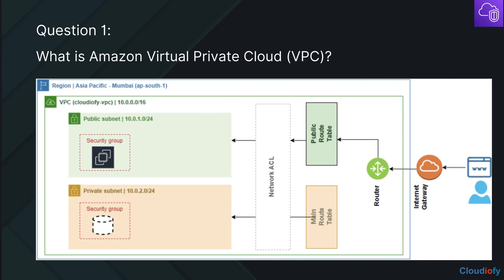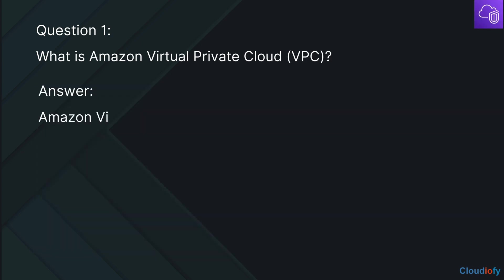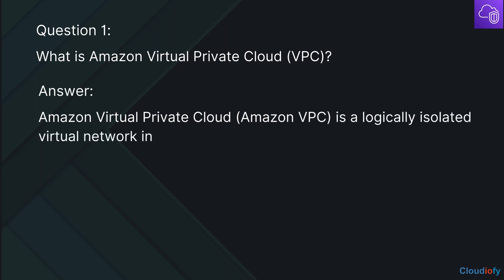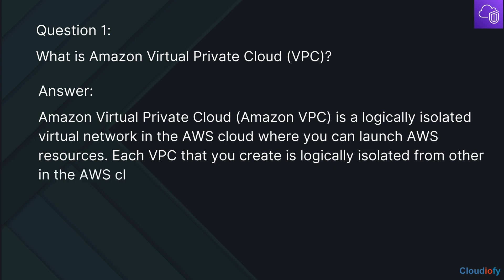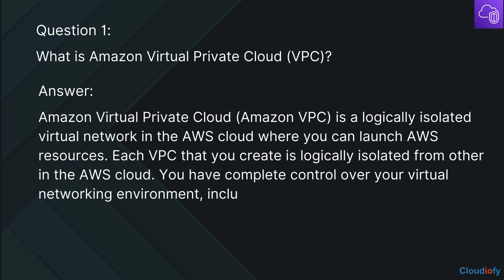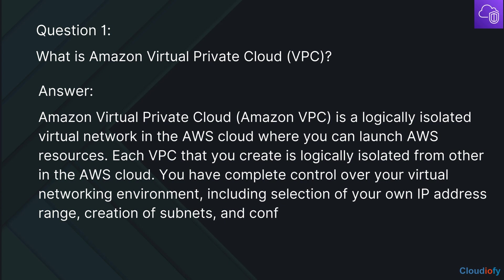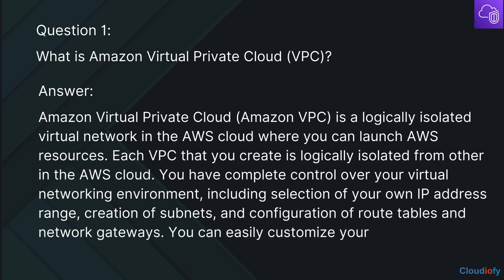The first question is: What is Amazon Virtual Private Cloud? Amazon Virtual Private Cloud is a logically isolated virtual network in the AWS cloud where you can launch AWS resources. Each VPC that you create is logically isolated from others in the AWS cloud. You have complete control over your virtual networking environment, including selection of your own IP address range, creation of subnets, and configuration of route tables and network gateways. You can easily customize your Amazon VPC's network configuration.